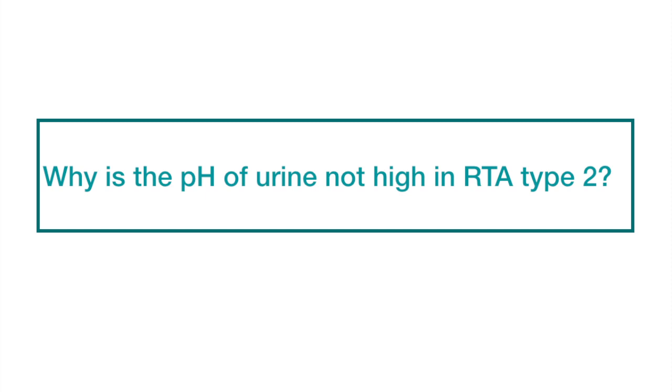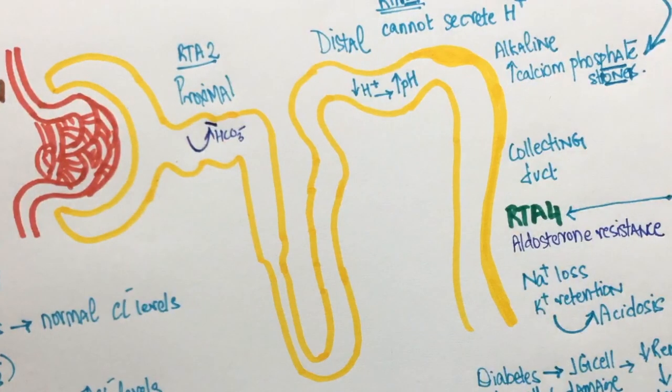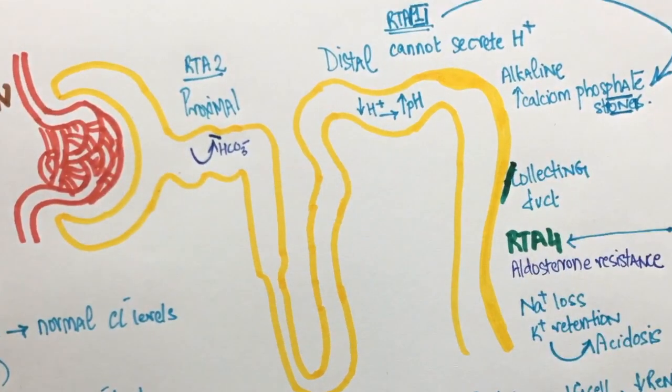In renal tubular acidosis type 2, there is a defect in the absorption of bicarbonate ions by the proximal tubule. So, the urine's pH is supposed to be high. But, the alpha-intercalated cells of the collecting duct acidify the urine. This makes up for the excessive bicarbonate and the pH of the urine is not too high.